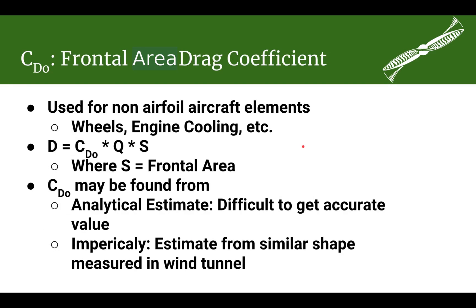Another drag coefficient that deals with parasitic drag is your frontal area drag coefficient, and it will usually have a sub-D0. This coefficient is used for objects that are not flying surfaces — that could be wheel pants, fuselages, sometimes cooling ducts, etc. In order to use this coefficient, it is very similar to all the other coefficients: it is your coefficient multiplied by q (dynamic pressure) and a surface area. But in this case, the surface area is not wetted area and it is not your plan form area — it is the frontal area.